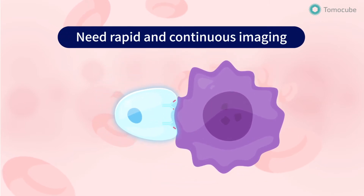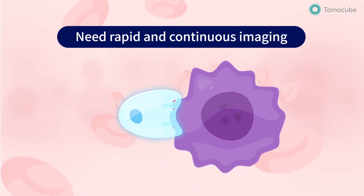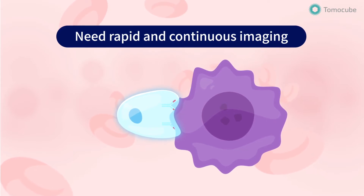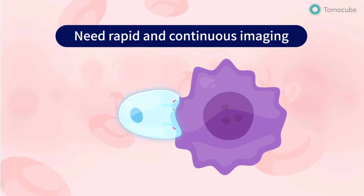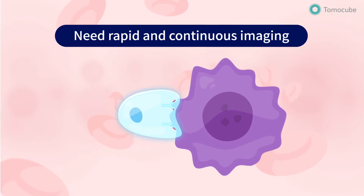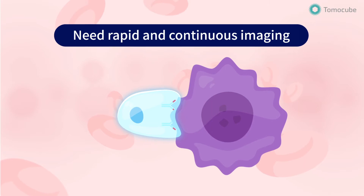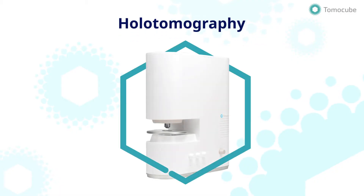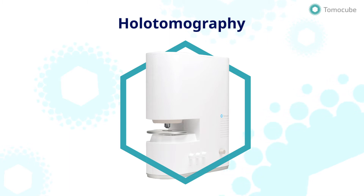The cell-to-cell interaction is a dynamic process, which involves active changes in morphological and biochemical properties of the immune cells. Thus, visualizing this process requires rapid and continuous imaging of live cells. Here, we use the new holotomographic microscopy to image and quantify cell-to-cell interaction in the immune response.